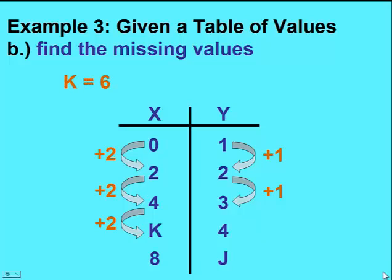Y is going up by ones. If this pattern continues, we know that j must be five.